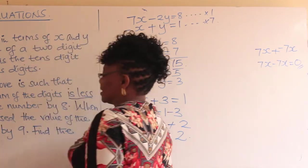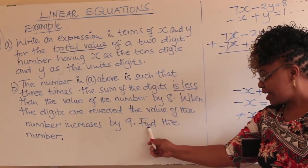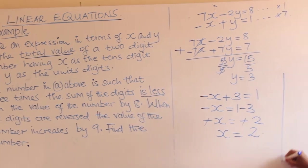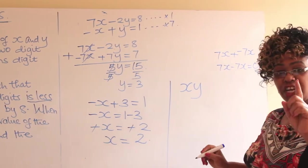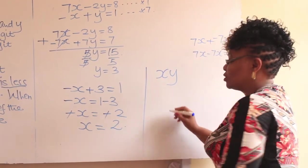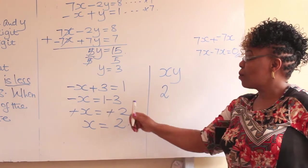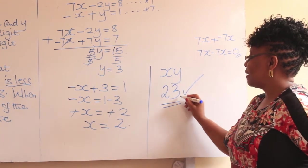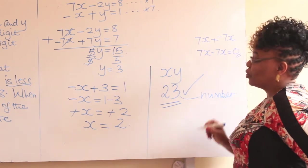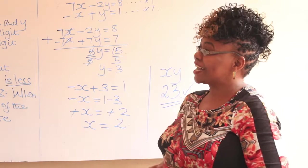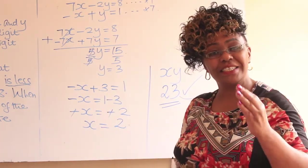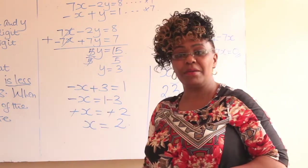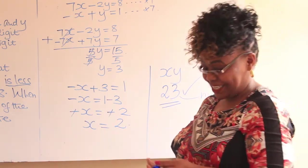So the original number was xy, with x = 2 and y = 3. Therefore the original number is 23. Go and practice again on linear equations — they are normally tested in exams. This was a KCSE problem. God bless you as you practice. Bye-bye.